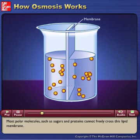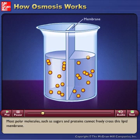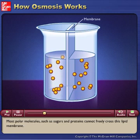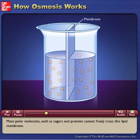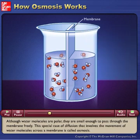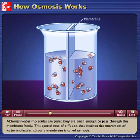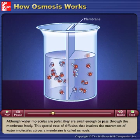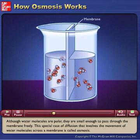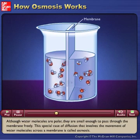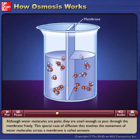Most polar molecules, such as sugars and proteins, cannot freely cross this lipid membrane. Although water molecules are polar, they are small enough to pass through the membrane freely. This special case of diffusion that involves the movement of water molecules across a membrane is called osmosis.